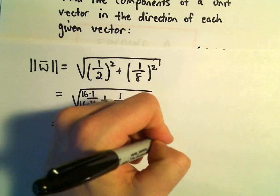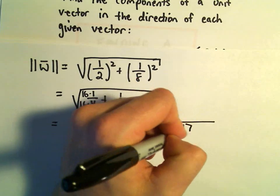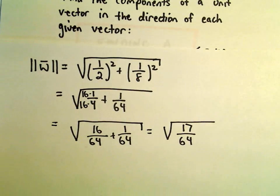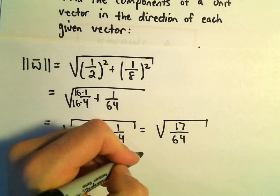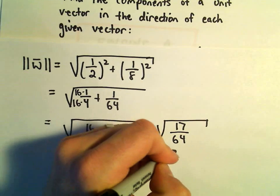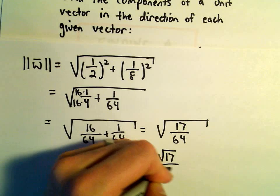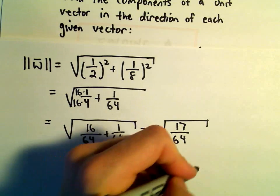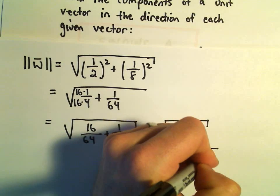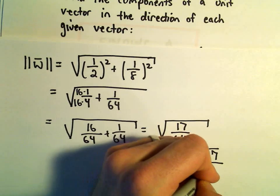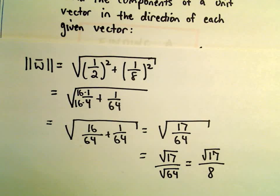If we simplify that, we'll get the square root of 17 over 64. But, we could even clean this up a little bit more. If we take the square root of the top over the square root of the bottom, that's just going to give us the square root of 17 over 8. Okay, so that's going to be the magnitude of our vector.